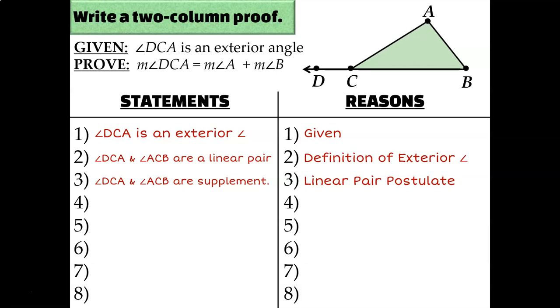And I know that supplementary angles add up to 180 degrees. So I can say that the measure of angle DCA plus the measure of angle ACB is equal to 180 degrees because of the definition of supplementary angles.